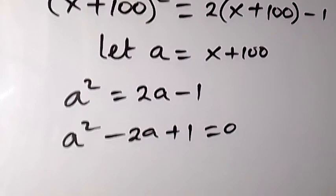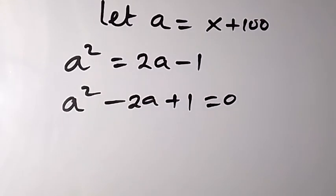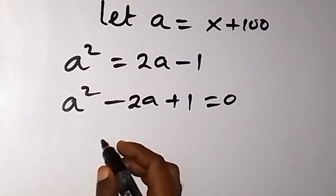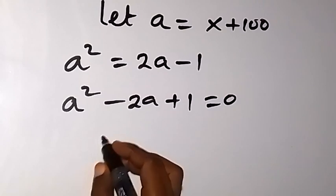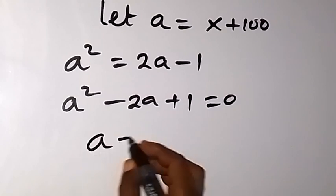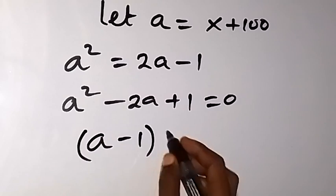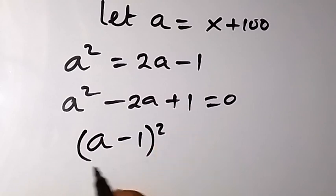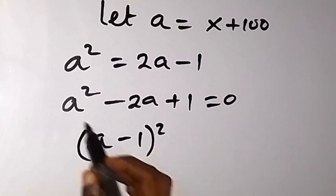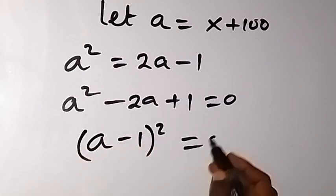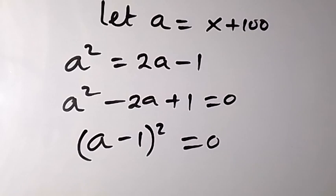From here what we have can be written in short form as (a minus 1) all squared equals zero, since the expansion gives us a² minus 2a plus 1.